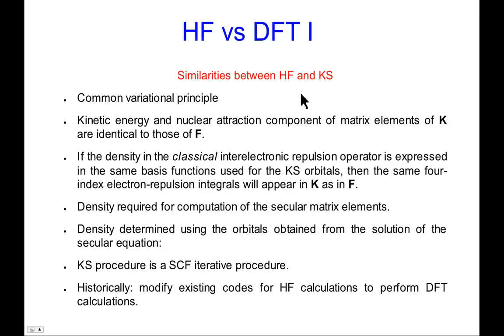So let me close this section by talking about some of the similarities and differences, which I've tried to highlight as we've gone along. But now I just want to really focus on that. So what are the similarities between Hartree-Fock theory and Kohn-Sham theory? One similarity is they both have a variational principle. So they're common in that regard. Second similarity is the kinetic energy and the nuclear attraction matrix pieces of the matrix elements are identical for K, the Kohn-Sham matrix, and F, the Fock matrix.